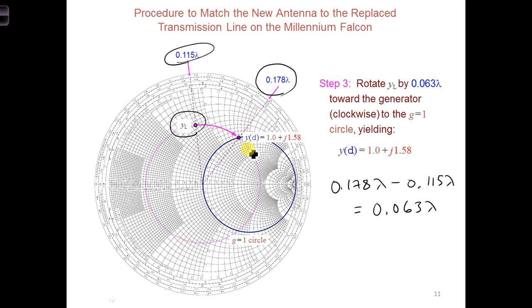Now we can read off the input admittance at that position, this distance down the transmission line. Since we're on the R, or G equal 1 circle, the real part is 1, and we can read off which arc we're going through, positive 1.58 for the imaginary part.